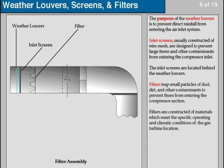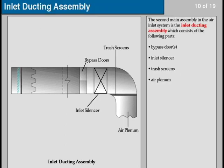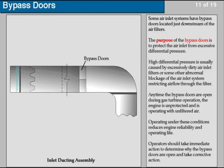Filters are constructed of materials that meet the specific operating and climatic conditions of the gas turbine location. The second main assembly in the air inlet system is the inlet ducting assembly, which consists of the following parts: bypass doors, inlet silencer, trash screens, and air plenum. Some air inlet systems have bypass doors located just downstream of the air filters. The purpose of the bypass doors is to protect the air inlet from excessive differential pressure, which is usually caused by excessively dirty air inlet filters or some other abnormal blockage of the air inlet system restricting airflow through the filter. Any time the bypass doors are open during gas turbine operation, the engine is unprotected and is operating with unfiltered air.